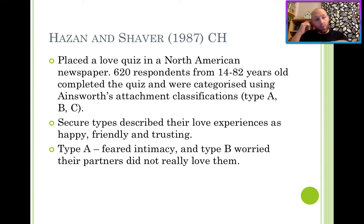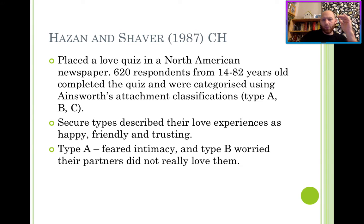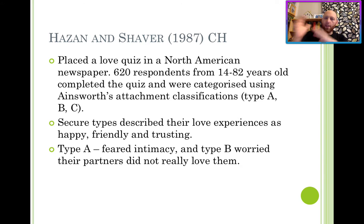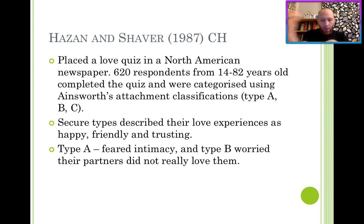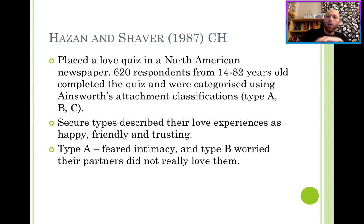Further evidence for the continuity hypothesis comes from Hazan and Shaver — we're going to look at this study in more detail later. They placed a love quiz in a North American newspaper and correlated the attachment type, secure and insecure, of participants with their adult relationship style. They found a strong relationship between childhood attachment and adult attachment. If you were an insecure, avoidant child, you grow up valuing physical intimacy without the emotional connotations. If you were a resistant child, you grow up quite jealous, agreeing with statements like 'I often want to get closer to other people more than they want to get closer to me.' And if you were secure, you had a healthy set of adult relationships.